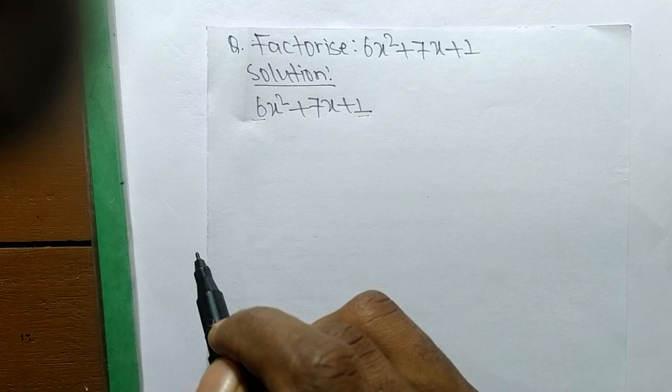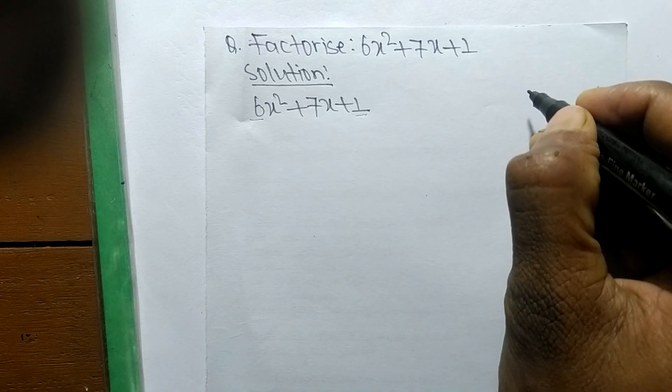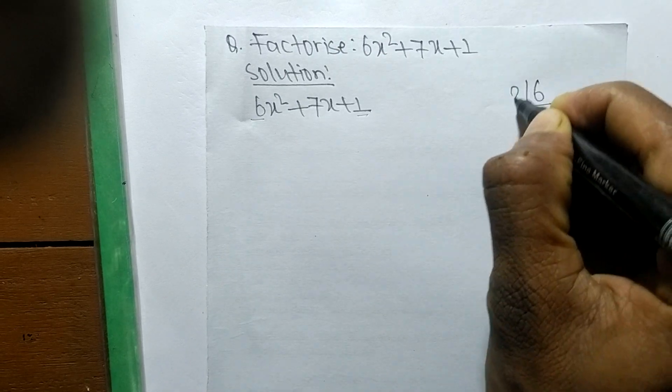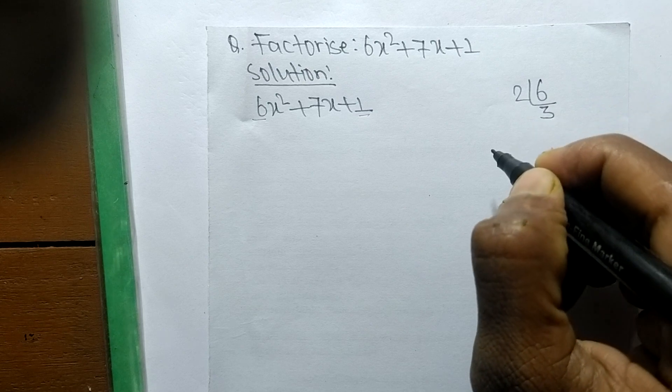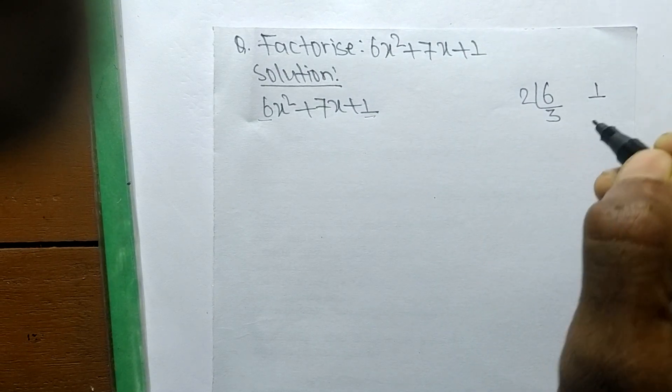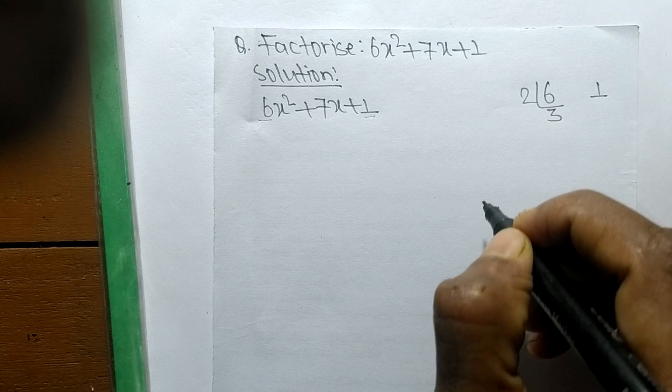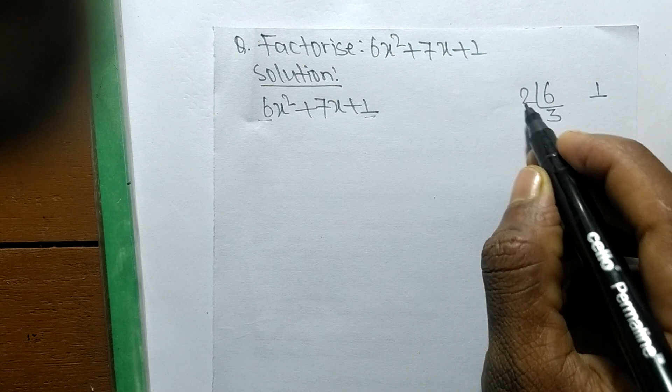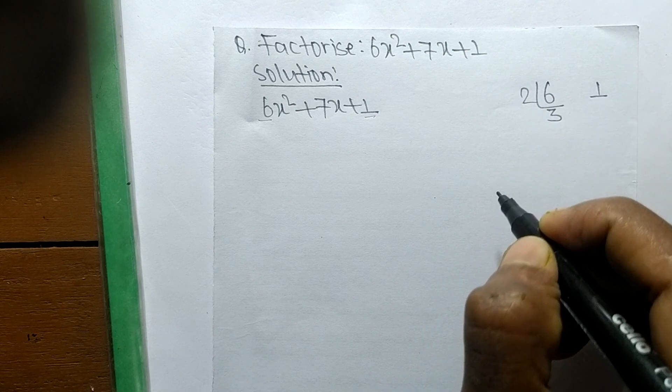So the prime factors of 6 is 2 times 3, which means 6. The prime factors of 1 is the number itself, 1. So we have numbers here: 2, 3, and 1.